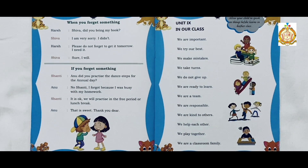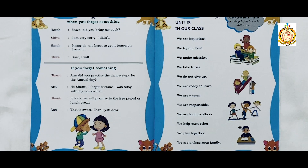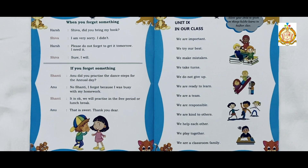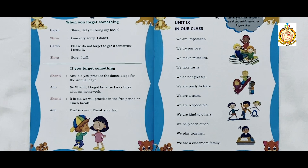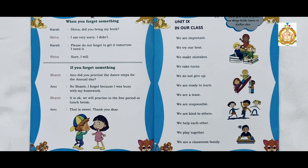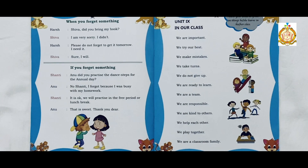Classroom rules are the base or foundation of any class. Children learn behavior by watching and copying others. Good behavior is important because it is a way of showing respect to your teachers and your parents. For example, we share our things, we respect our teachers, and we play together.